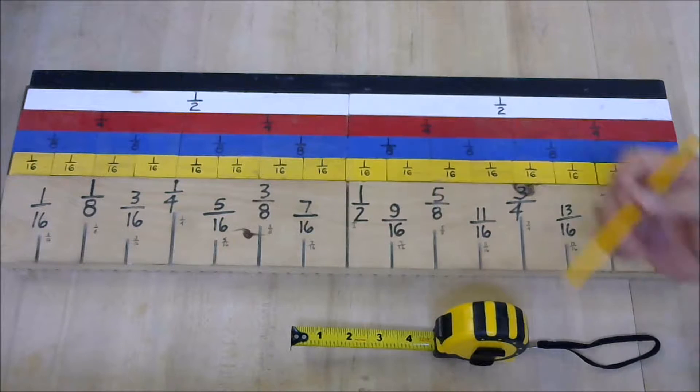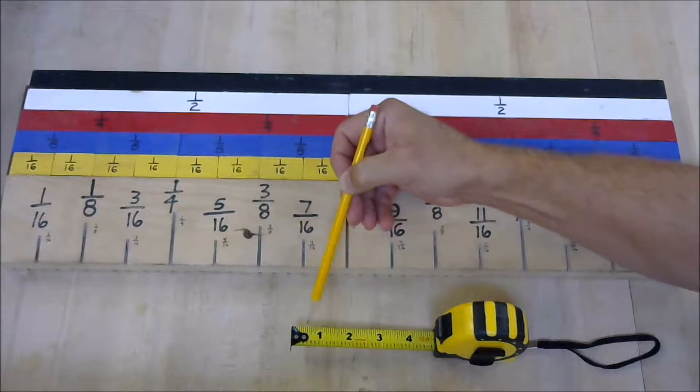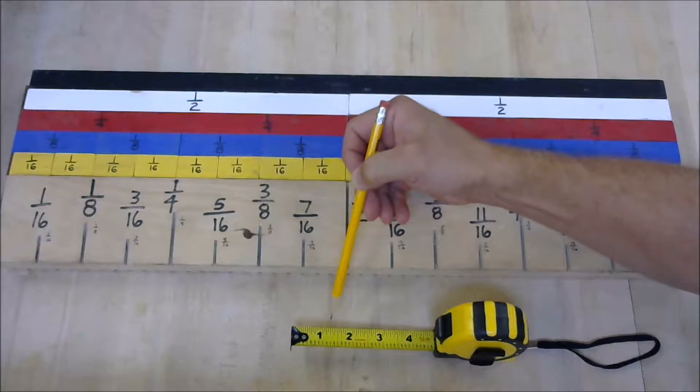Okay, so our goal here is to figure out what all these little lines between 0 and 1 mean. What are these fractions of the inch?